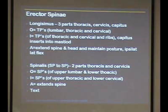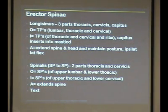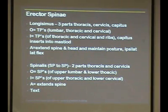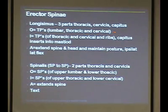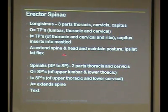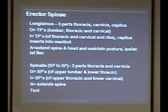Moving from lateral to medial, we have longissimus. The iliocostalis is most lateral, starts lowest, and has three segments — thoracic, cervical, originating from the ilium. Longissimus doesn't have a lumborum part; it has thoracis, cervicis, and capitis portions, mostly spanning lumbar through cervical. Even though it originates in the lumbar spine, its named parts are thoracis, cervicis, and capitis. The capitis goes all the way to the mastoid. It extends the spine, maintains head position, and if one side contracts, it laterally flexes to the same side.